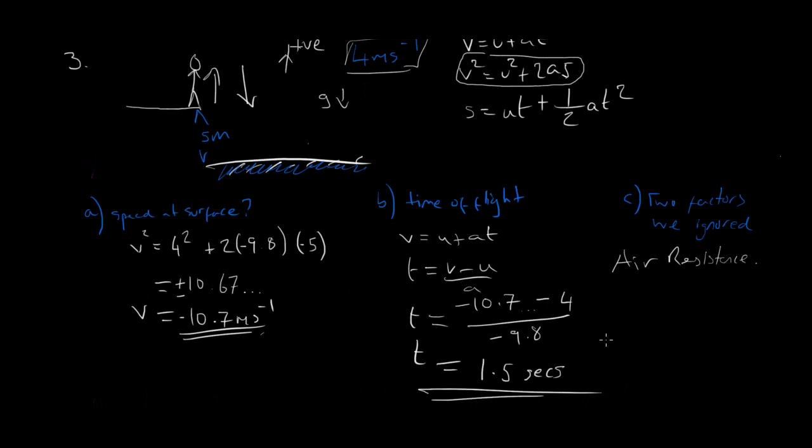The second one we ignored would be, yeah it's very unlikely that this is vertical. If she jumps out exactly vertical she's going to hit the board back, so she would have some kind of movement forwards. Really, unlikely vertical.